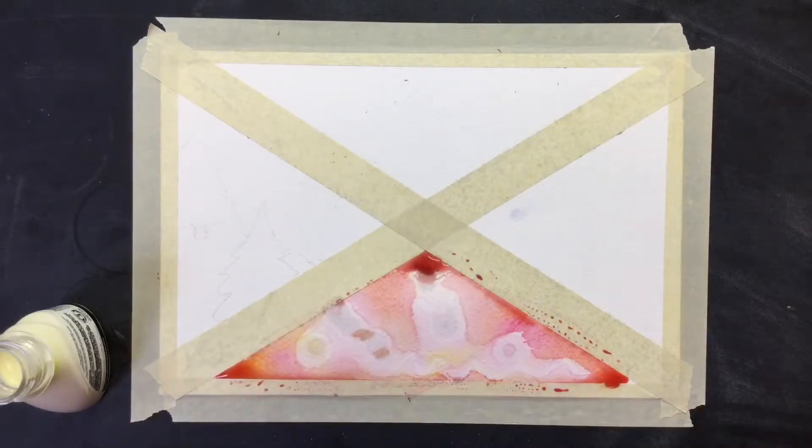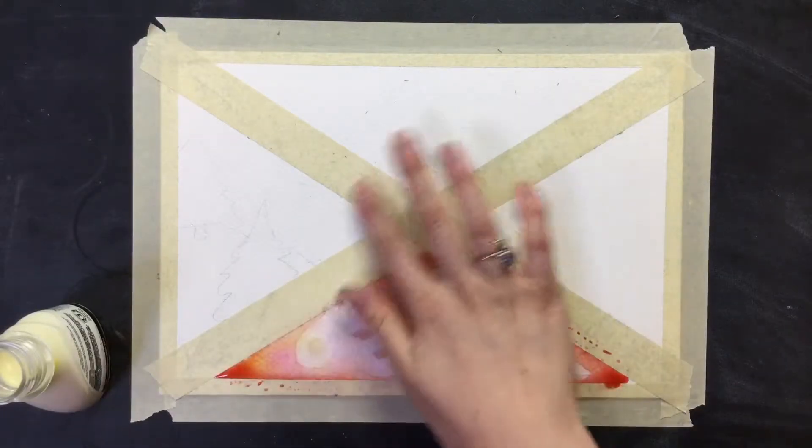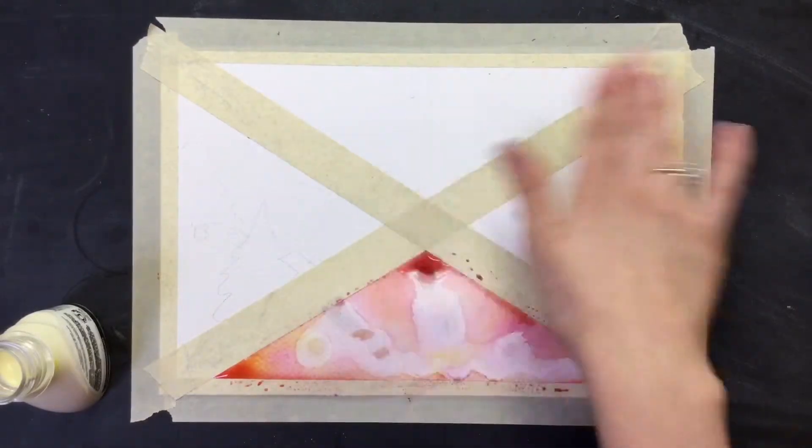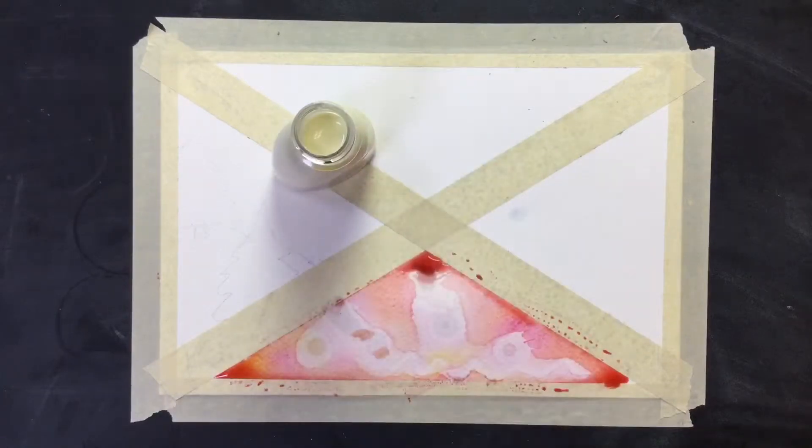In this section, I'm going to show you how to use the masking fluid again. We practiced the technique with our acrylic paints, but really masking fluid is more common when used with watercolor, and oftentimes it's used to mask the actual white of the paper.